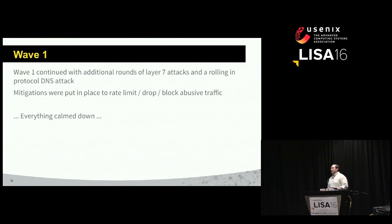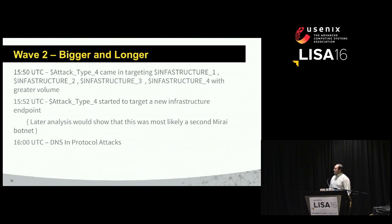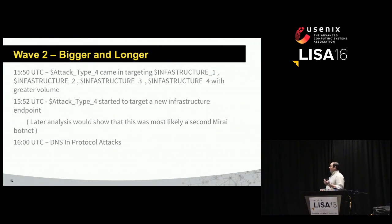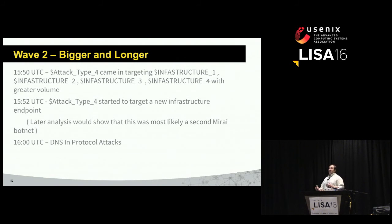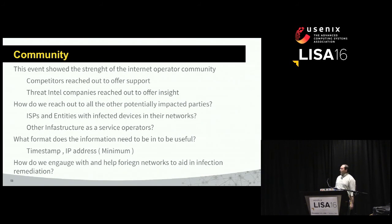Eventually you resort to interesting collections of whitelisting and other mitigations, and things subside. Everything calms down, and Friday goes back to being normal. Then wave two comes back bigger and longer — attack type four targeting a collection of infrastructure they'd seen to be useful, then a second botnet came in targeting another set of infrastructure. Later analysis suggests this was the second Mirai botnet — it matches the fingerprints — but we don't have definitive proof. A few minutes later, back with the DNS and protocol attacks. Quick note to thank the community: I've never seen so many people you compete with for business being so wonderful and nice and offering help — threat intel researchers offering all the details they had.